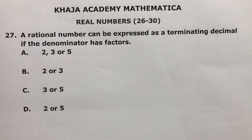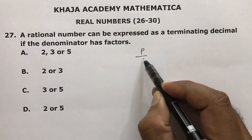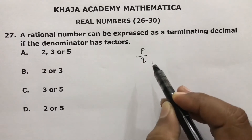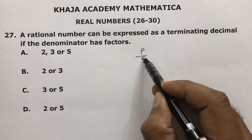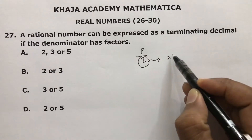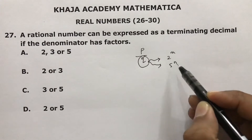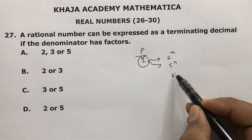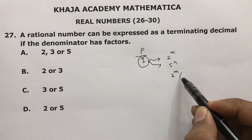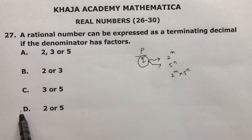A rational number can be expressed as a terminating decimal if the denominator, in p by q form, has factors of only 2, or 2 and 5. So the correct option is D.